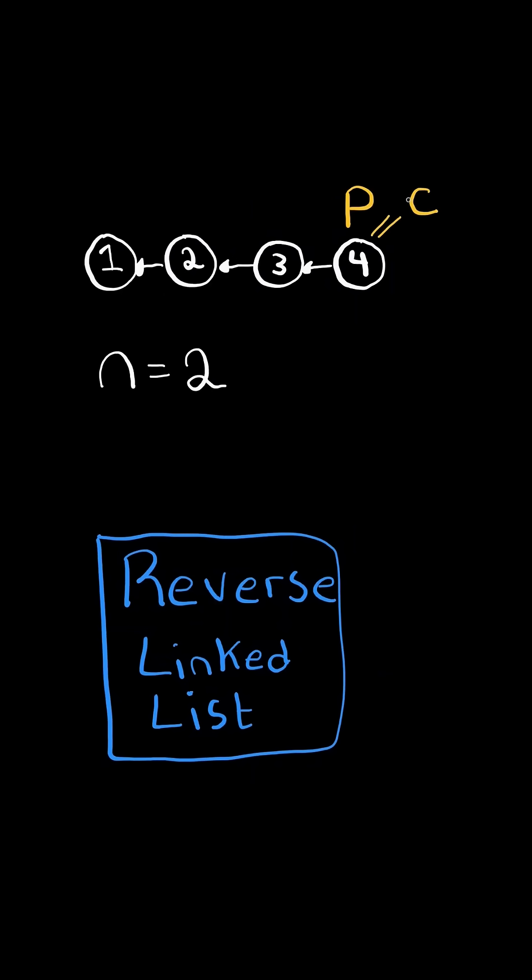At the end, previous will be the new head, and we want to reverse the linked list again. For simplicity, I will rename my variables, and begin reversing by setting current.next to previous, and advance both current and previous.